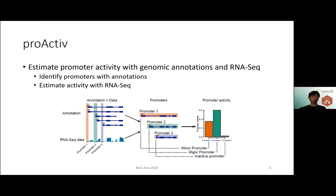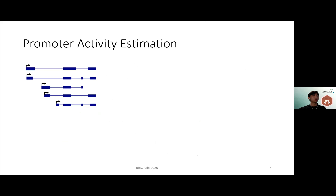This is a rough scheme of how ProActive works. With annotation and RNA-seq data, we can identify the annotated promoters and then quantify them. In this example, we have a gene with five isoforms. When we measure gene expression, we are essentially flattening out the five isoforms and measuring the sum of the expressions. On the other extreme, we can also estimate the expression of each isoform. But studies show that gene expression is more robust than isoform expression due to limitations in short-read sequencing technologies.